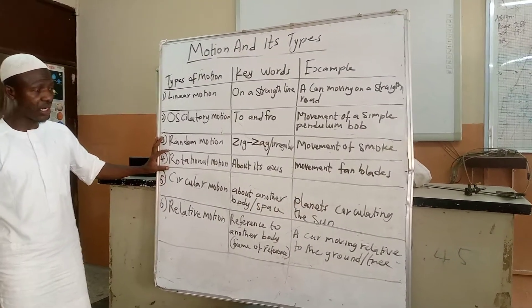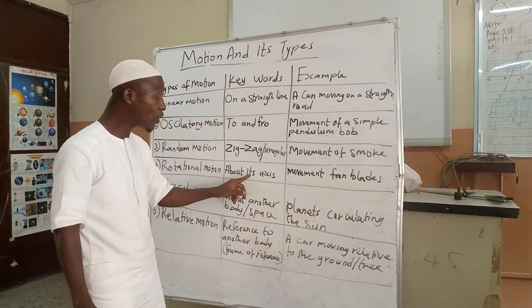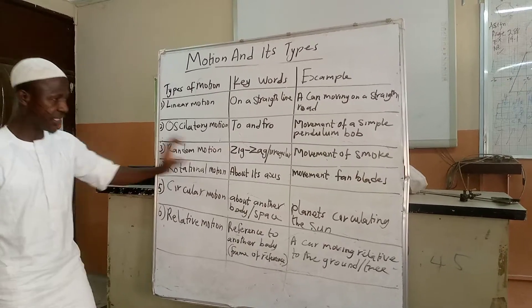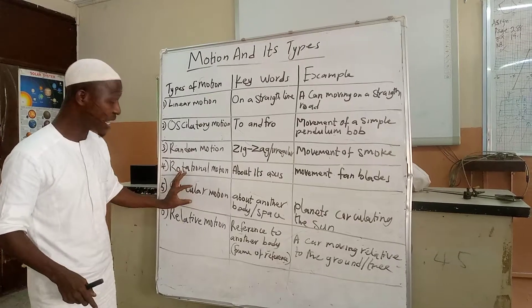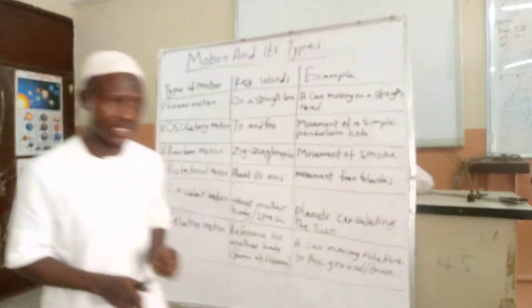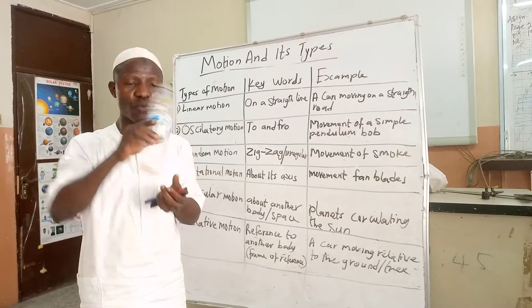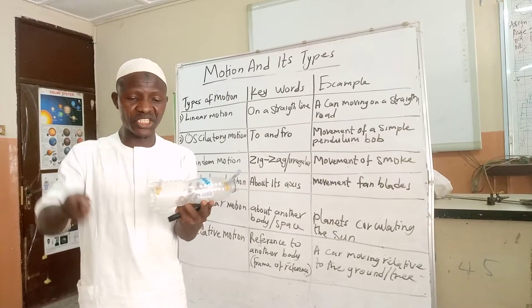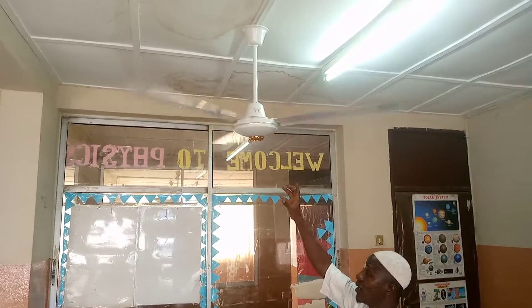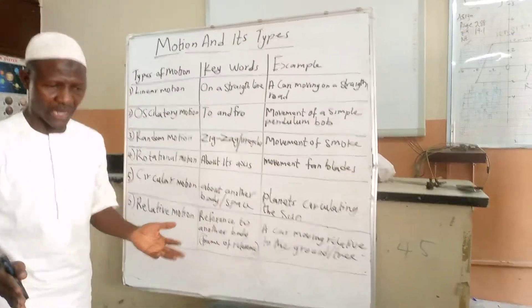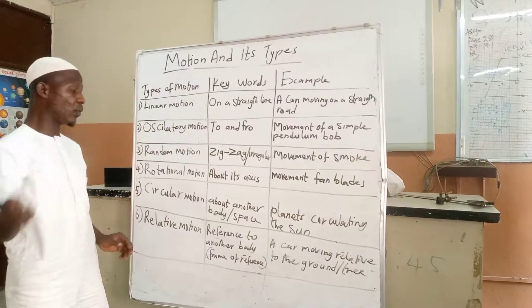Another type of motion is rotational motion. The keyword is 'about its own axis.' Don't confuse rotational motion with circular motion — they are different. Rotational motion is when an object moves about its own axis, like a spinning fan. Circular motion is when an object moves about the axis of another object. For example, winding a stone on a string is circular motion, not rotational motion.